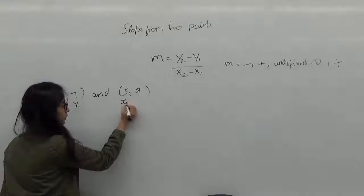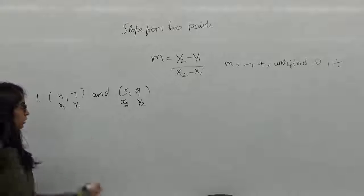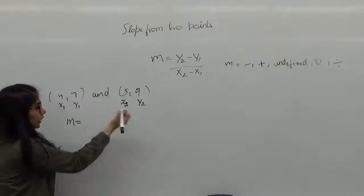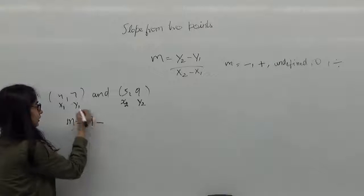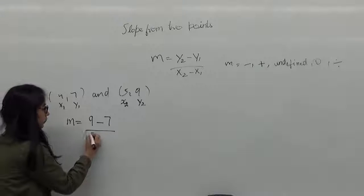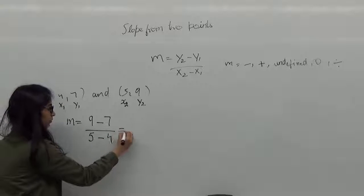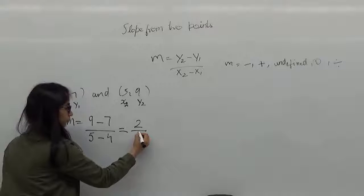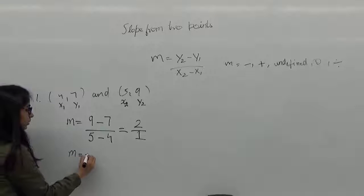x2 is 5 and y2 is 9. So we just apply the formula and so y2 is 9 minus y1 that is 7 over x2 that's 5 minus x1, 4. Simplifying this we get 2 over 1. So my slope here is positive 2.